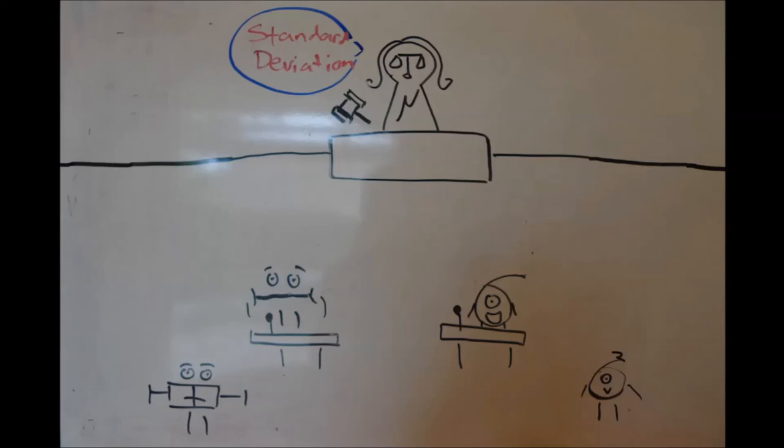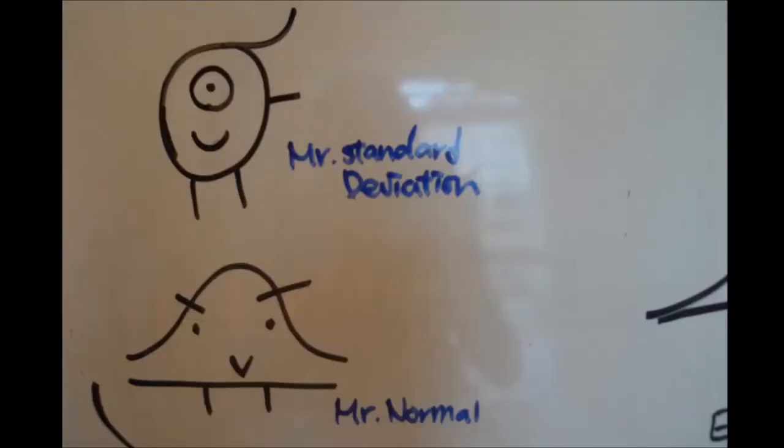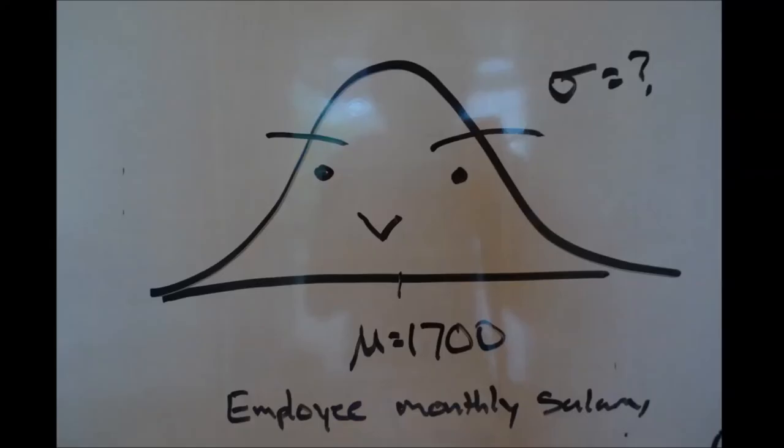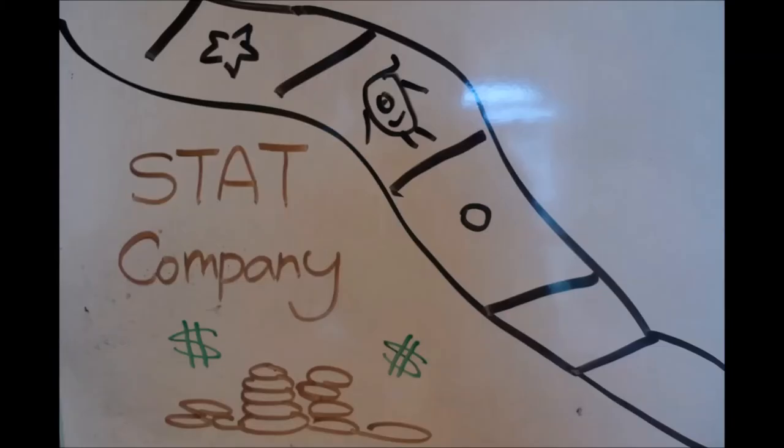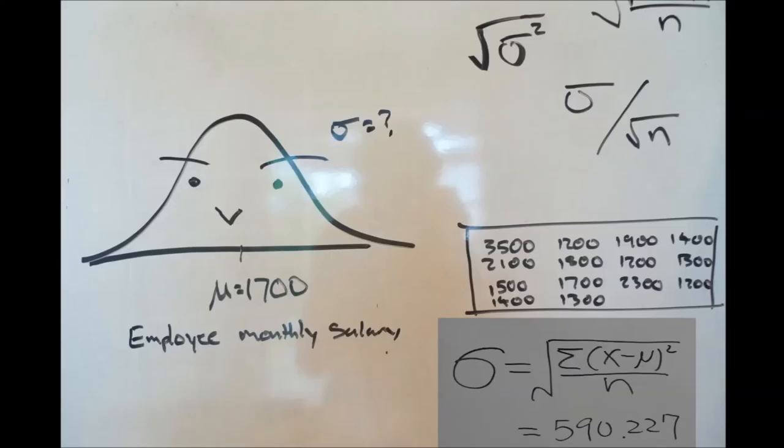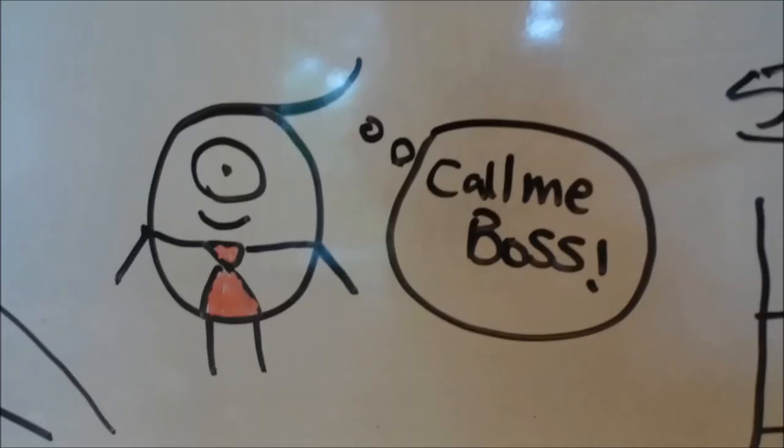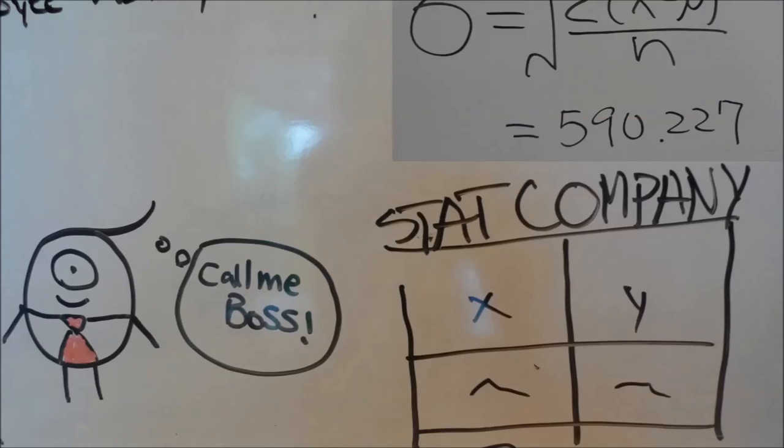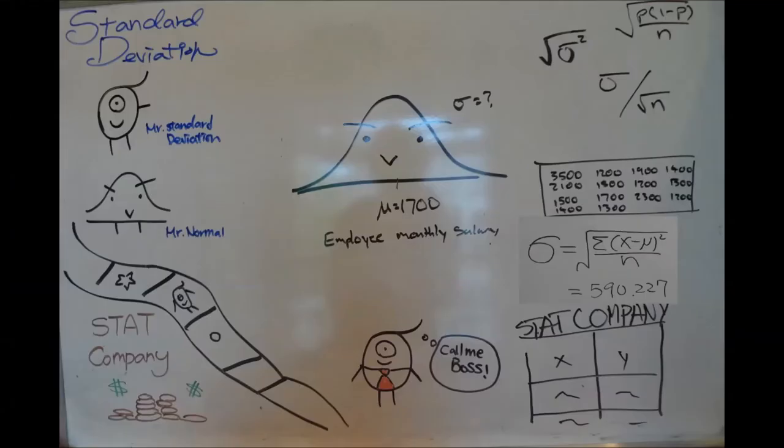Finally, we give the floor to Mr. Standard Deviation. Okay, Mr. Normal here will help me explain just how my variability works. Say we are given a normal distribution of employee monthly salaries within the official stat company. In order to calculate the standard deviation, calculate the variance by summing up the difference of given employee monthly salaries to the sample mean, $1,700 squared divided by the sample size, 14. After that, just square the calculated variance to get the standard deviation, 590.227. Standard deviation is a great statistical way to measure deviations, but unfortunately, they are only optimal for normal and approximately normal distributions.